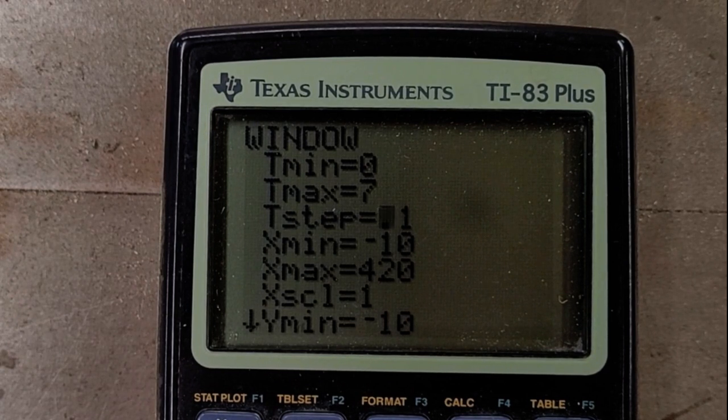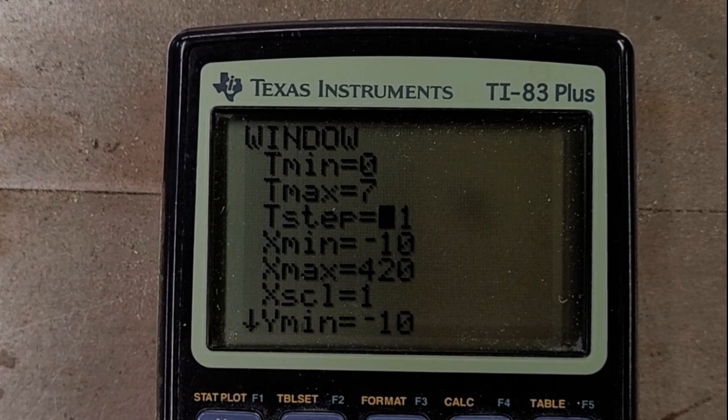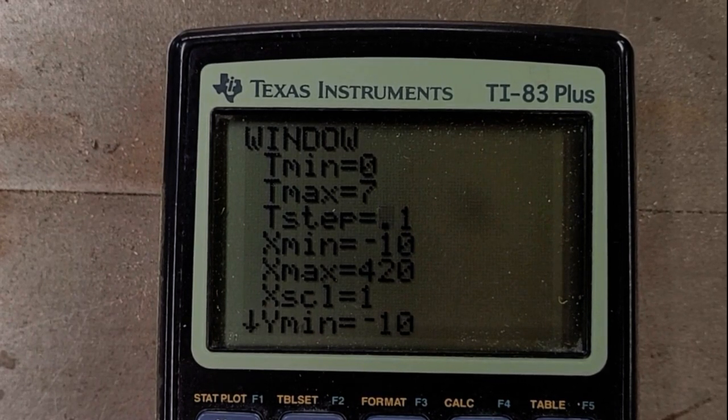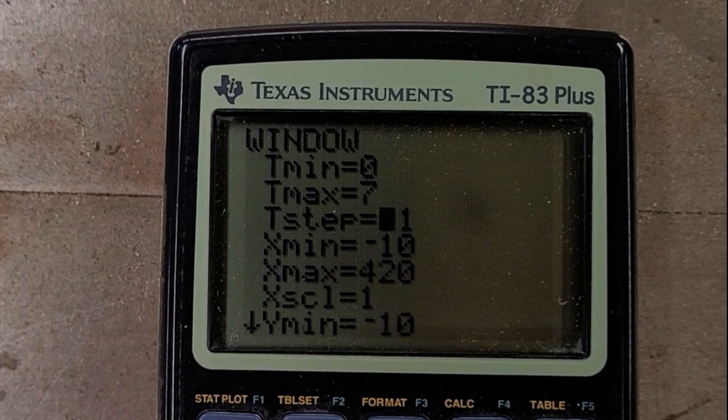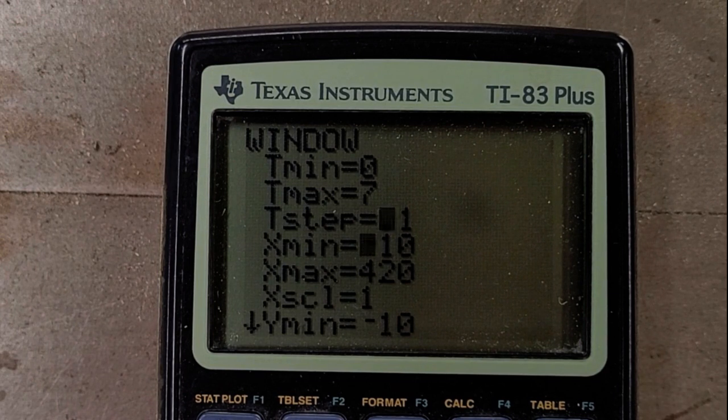Because you don't want to get a graph where you only see like every two seconds or every five seconds. You want, why don't we see every tenth of a second? It'll give us a more precise graph. The x min and max, okay, I think that the home run fence is 400 feet out there. So why don't we make the horizontal distance at least get to 400?